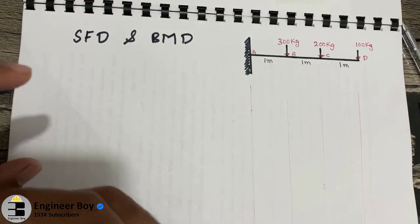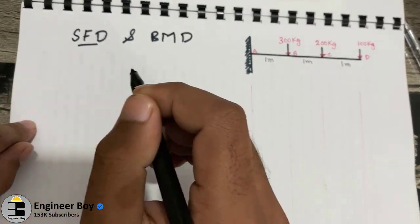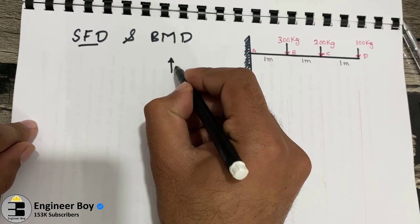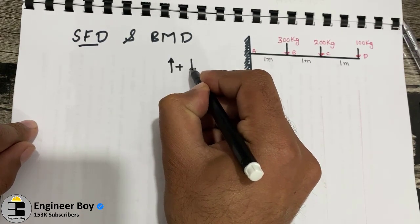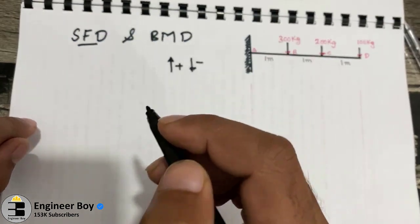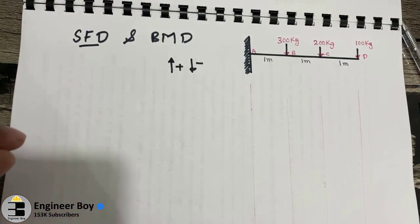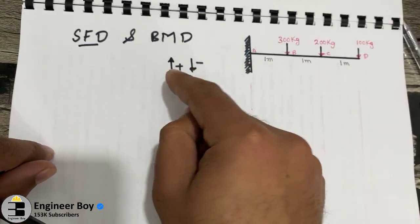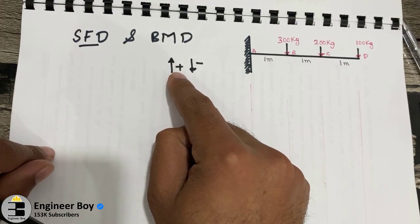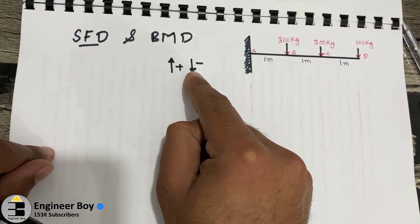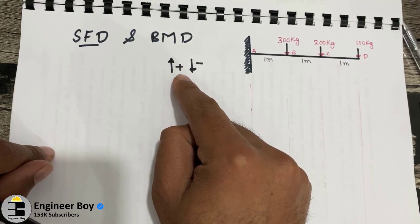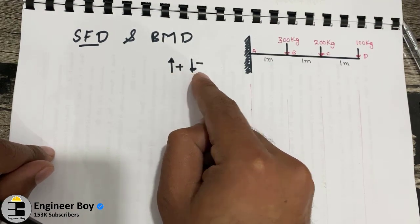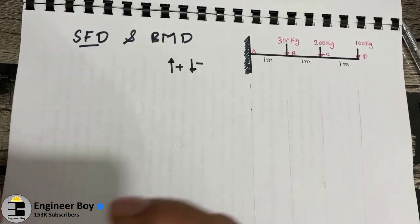Let's calculate shear force first. For notation, upward force is taken as positive and downward force is taken as negative. Note that in many books it is the reverse — upward is negative and downward is positive. It depends on the convention used, but it does not matter as long as you are consistent.